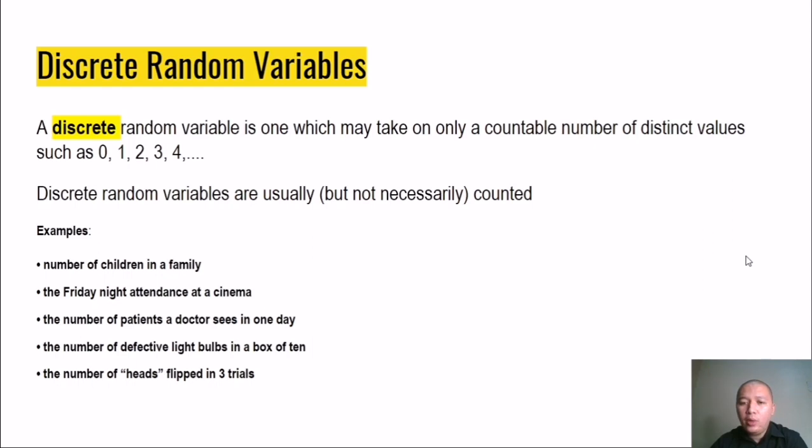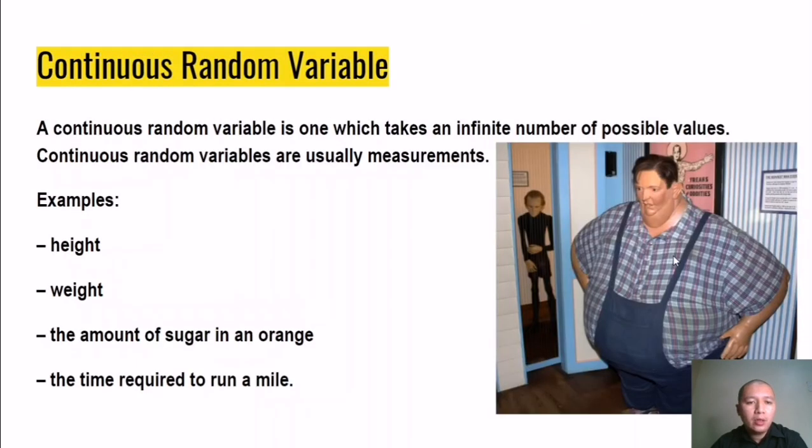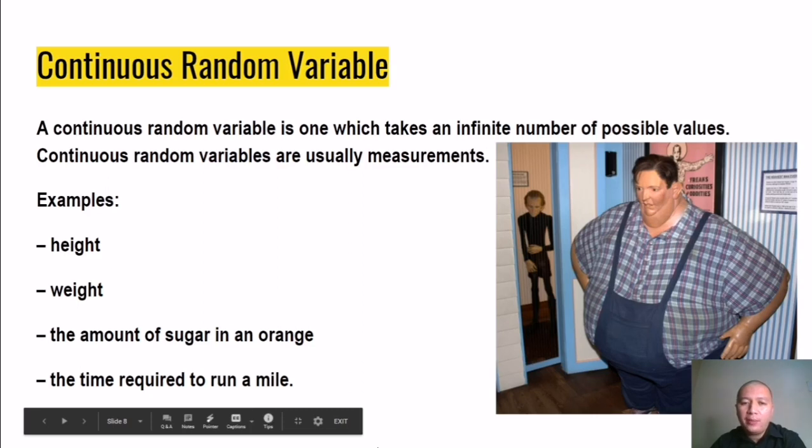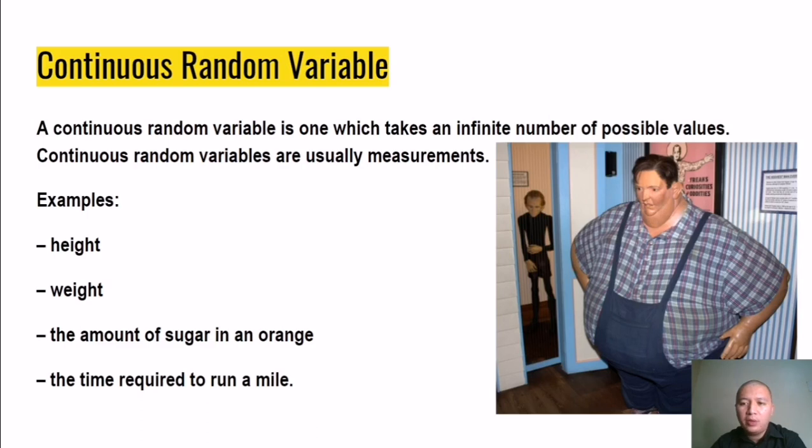Next, we go to continuous random variable. A continuous random variable is the one that takes an infinite number of possible values. Continuous random variables are usually measurements. Take, for instance, we have height, weight, the amount of sugar in an orange, the time required to run a mile.